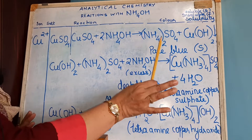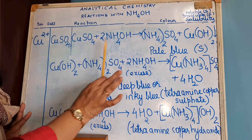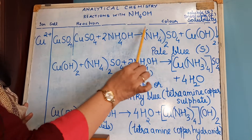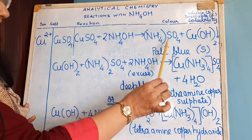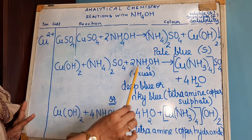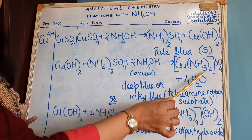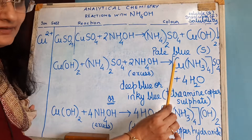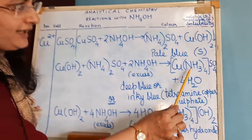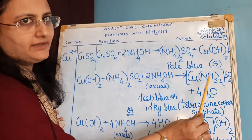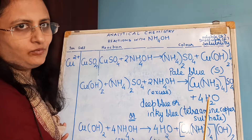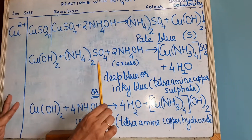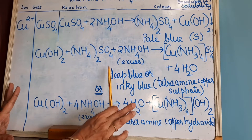The first reaction is easy to understand — it is a double decomposition reaction. You know the valencies of the radicals, so you balance it in the same manner. You just take products of the first reaction and add excess of NH4OH. What you are supposed to remember is: tetraamine — tetraamine means 4, so 4 times amine, and amine is the amino group NH3. So 4 times NH3, copper sulphate — that is how you write it — plus 4 molecules of water. Many children make mistakes in this reaction, so this is the trick to remember it.